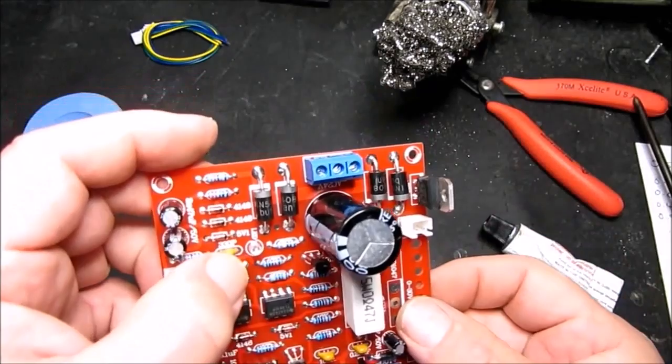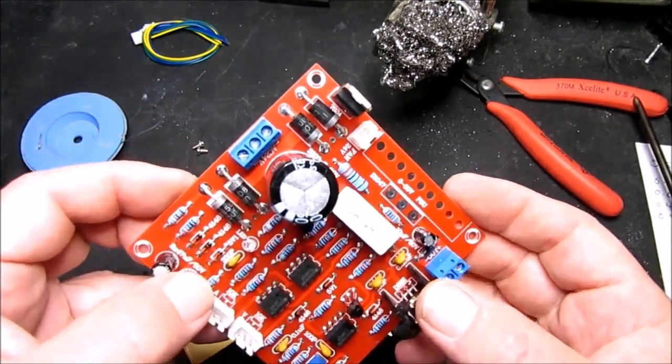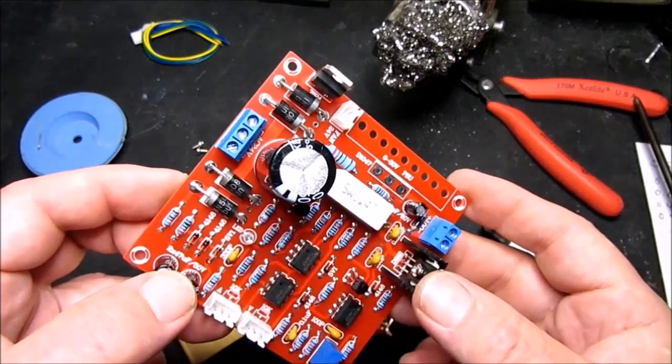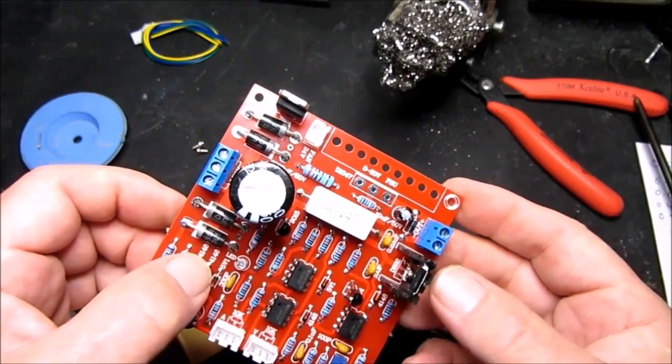And last but not least, the small little LED. Just remember that the long lead, there's one long lead on the LED and that's the positive side which is identified on the circuit board.